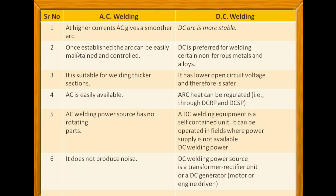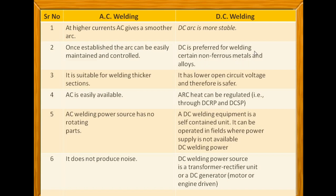Another difference: for AC welding, once established, an arc can be easily maintained and controlled because of the alternating current. But in the case of DC power source, it is preferred for welding certain non-ferrous metals and alloys. AC welding is also suitable for welding thicker sections.